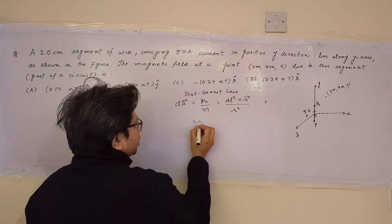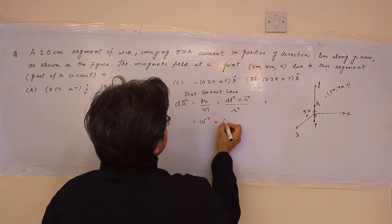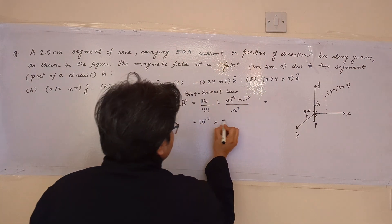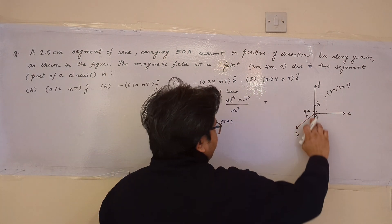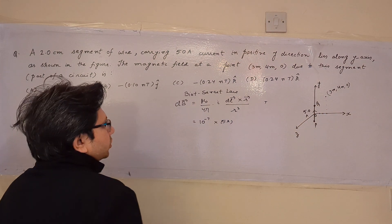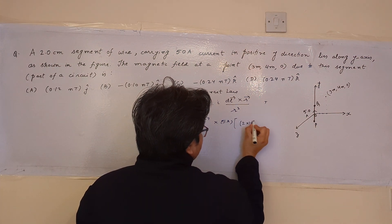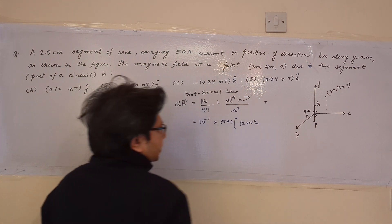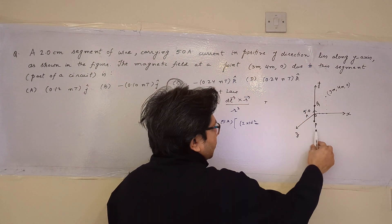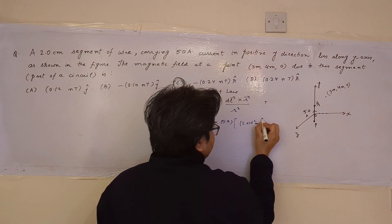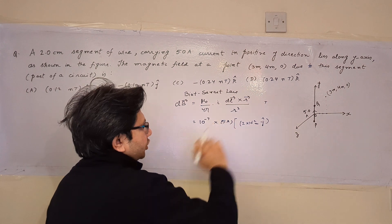Putting in the respective values: μ₀/4π is 10 raised to the power minus 7. The current I is given as 5 ampere in this problem. Now dl is the vector of this particular segment. The segment has a length of 2 centimeters, so we convert to SI units: 2 × 10⁻² meters. The direction is positive y, so we write ĵ. Therefore dl = 2 × 10⁻² ĵ meters.